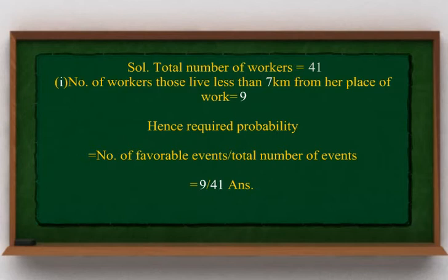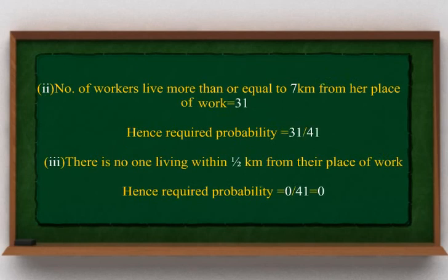Total number of workers is equal to 41. (1) Number of workers living less than 7 km from their place of work is 9; required probability equals 9 divided by 41. (2) Number of workers living more than or equal to 7 km from their place of work is 31; hence required probability equals 31 divided by 41. (3) There is no one living within half km from their place of work; hence required probability equals 0 divided by 41, which equals 0.